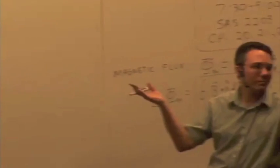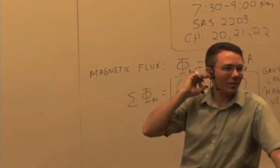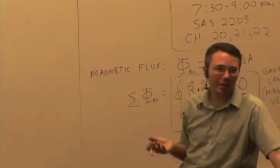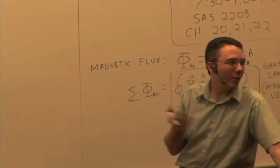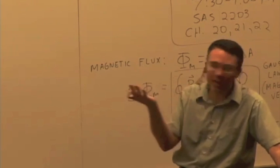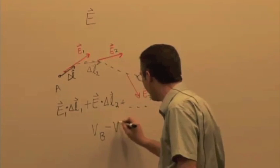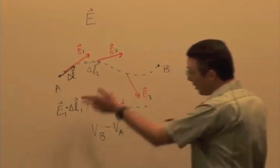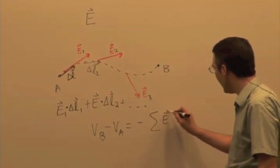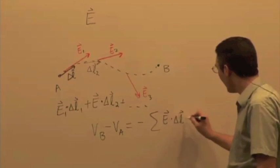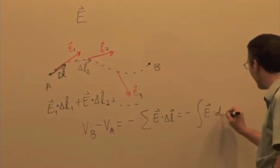When we did this type of calculation, we were calculating potential difference. Delta V — V_B minus V_A — is actually the negative of this quantity. It happens to be the negative of the sum of E dot delta L, or the negative integral of E dot DL.